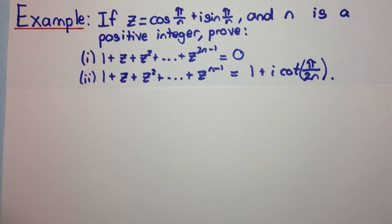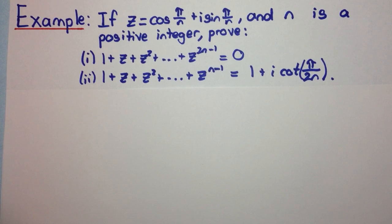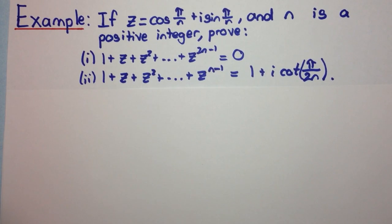Welcome to today's video. In this video, we're going to be looking at another example where we're using De Moivre's theorem to solve a question. If z equals cos(π/n) + i·sin(π/n), and n is a positive integer, prove that 1 + z + z² + ... + z^(2n−1) equals 0.